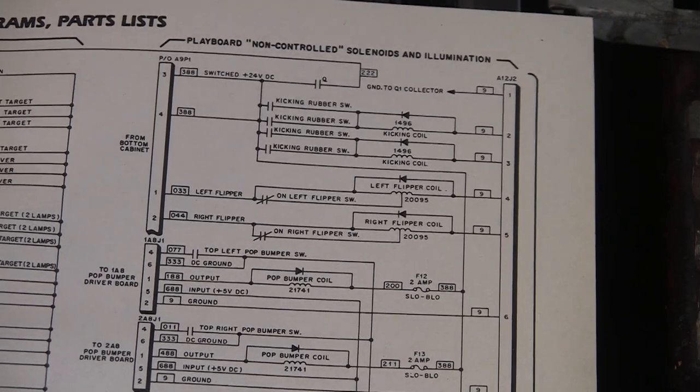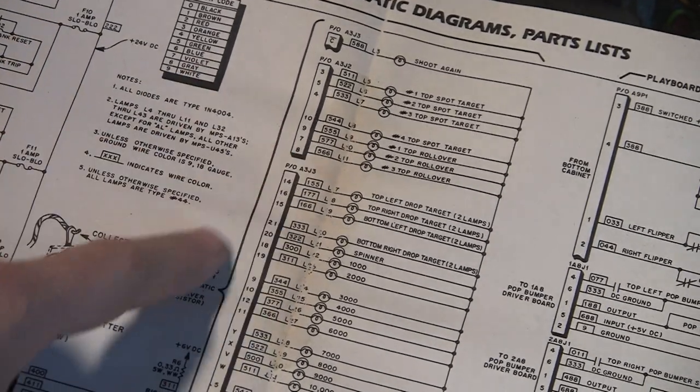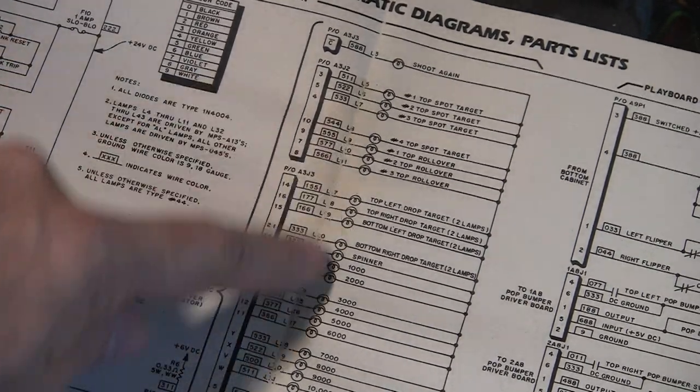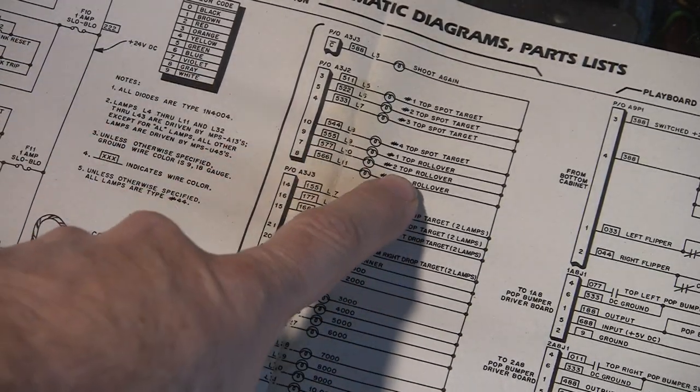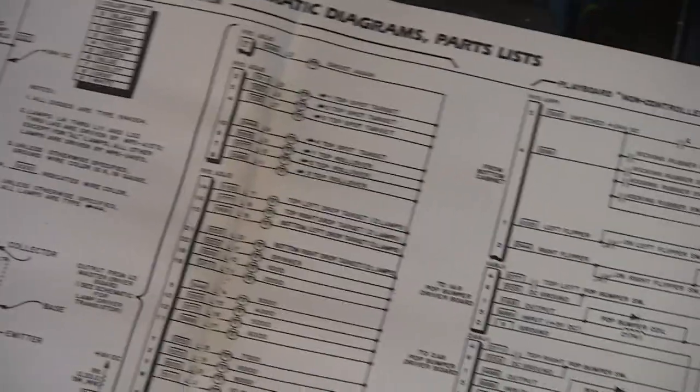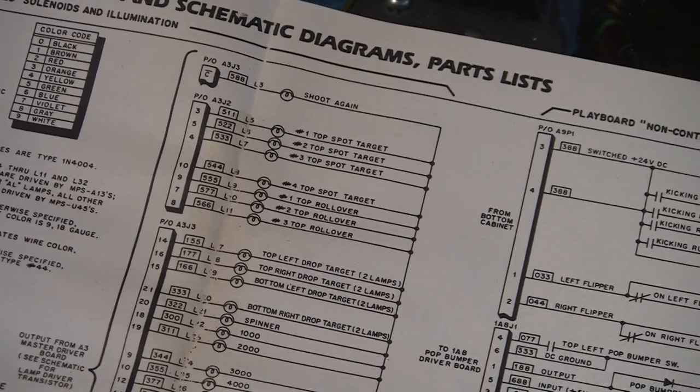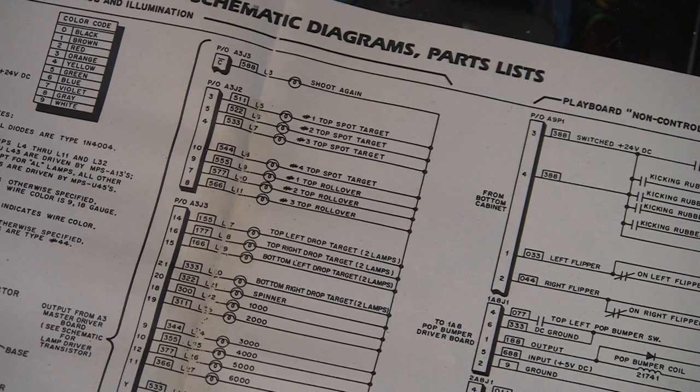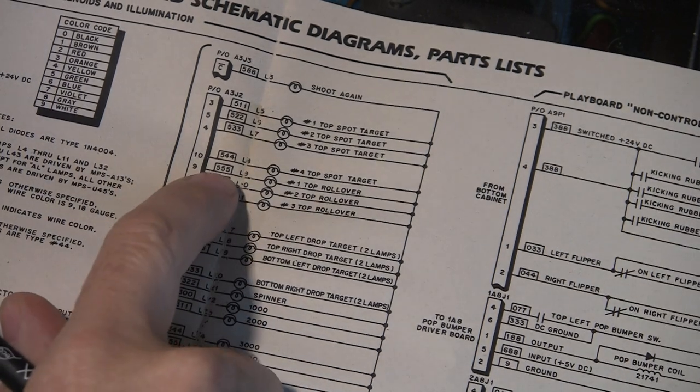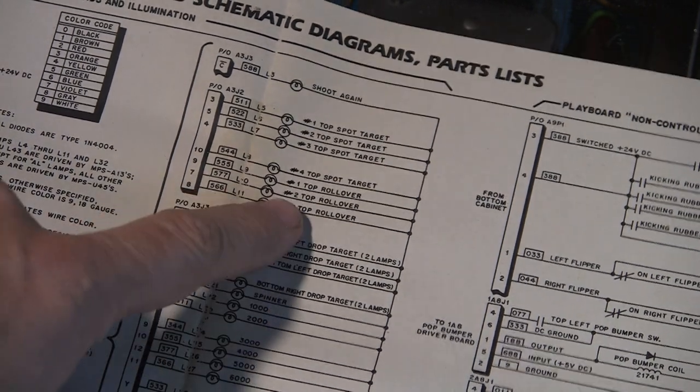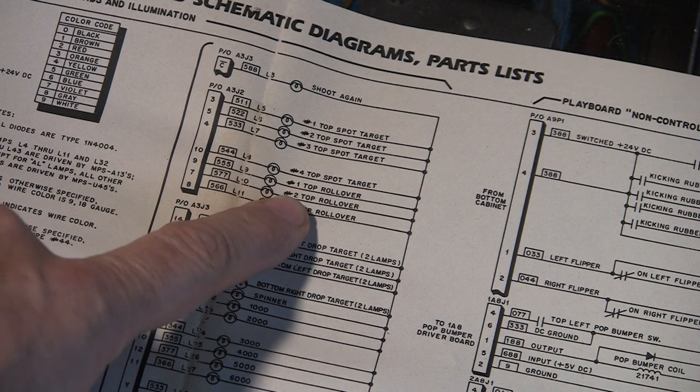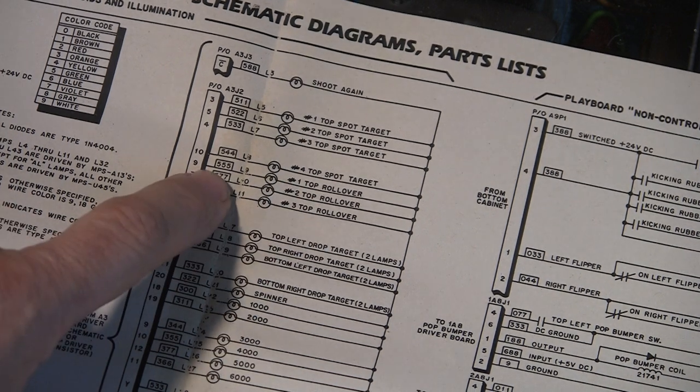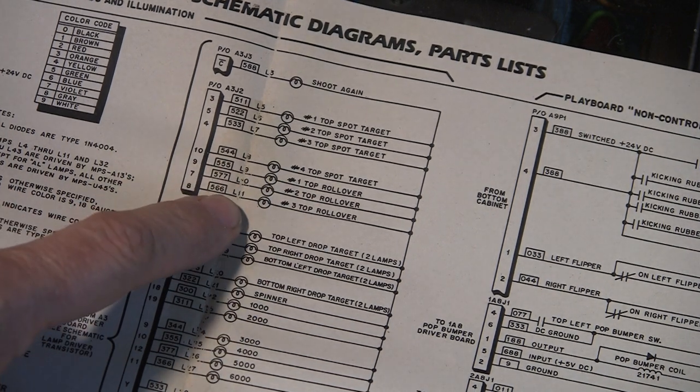So everything right here, these are all the individual lights. So I can see the top rollovers are right here. So let's zoom in, take a look at that. So this shows light nine, ten, and eleven. Number one top rollover, number two top rollover, number three. So that's L nine, ten, eleven.